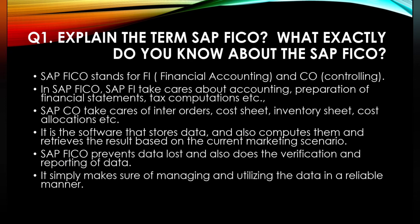The first question is: explain the term SAP FICO. SAP FICO stands for FI, which stands for Financial Accounting, and CO, which stands for Controlling. In SAP FICO, SAP FI takes care of accounting, preparation of financial statements, and tax computation, while SAP CO takes care of internal orders, cost sheet, inventory sheet, and cost allocation.